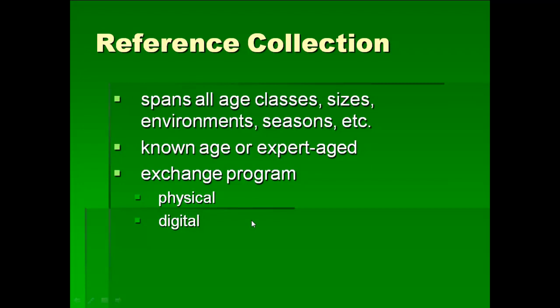It also helps, if you've got this reference collection, to have some sort of exchange program. Instead of your lab always using the same structures, it's very helpful to trade with other labs — to get fish from a wider range of age classes and sizes, and also so you don't get used to the test and start recognizing the same structures again. There are lots of ways to exchange your reference collection: you can simply mail them back and forth, or if you have good enough digital images, you can just exchange those. However, the digital image never looks as good as the image through the microscope, so you always want to trust what you see through the microscope over the digital image.